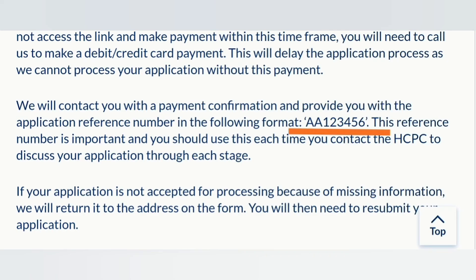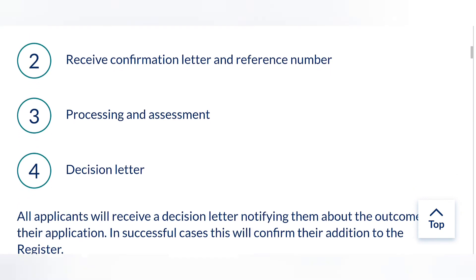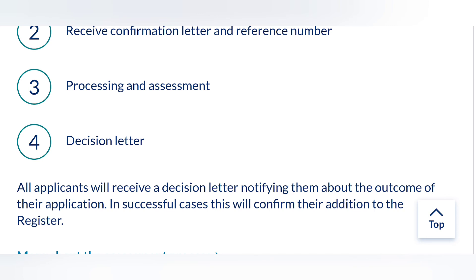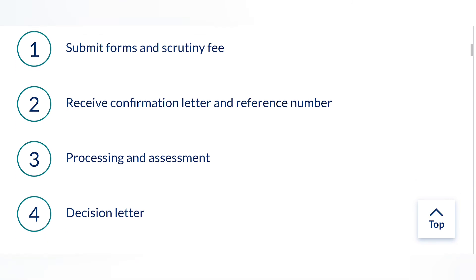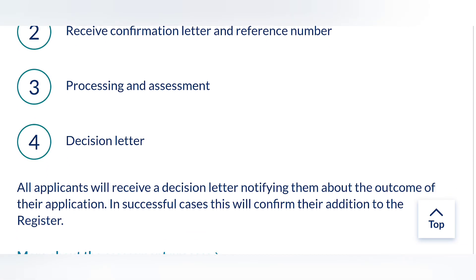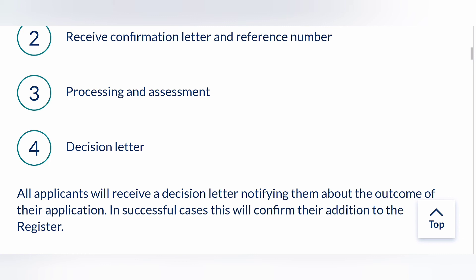This letter confirms that your payment and application have been received. It will contain an application reference number in a specific format, which you will use as a reference whenever you contact the HCPC about your application. Step 3 is for the HCPC to process all the information you've submitted and assess whether you meet all the requirements for registration. Once assessments are complete, you will receive a decision letter. If you meet all the requirements, your name will be included on the register. If not, you'll be contacted on how to rectify this.